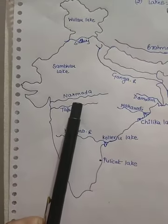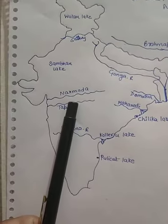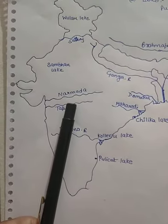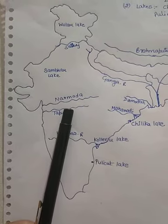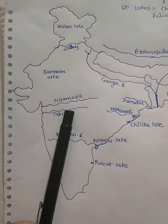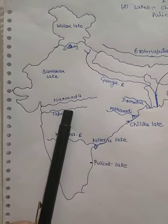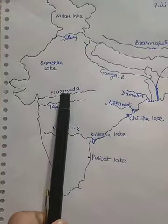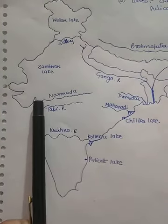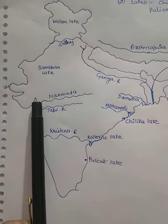Next is the Narmada river. The Narmada rises in the Amarkantak hills in Madhya Pradesh. From Madhya Pradesh it flows here, then through Gujarat, and drains into the Arabian Sea.